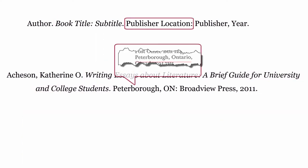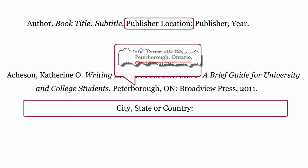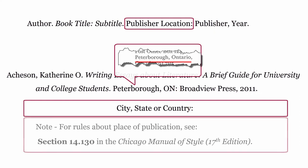Publisher location: this is where the publisher is based. The publisher's location is formatted using the city, comma, and then the state or country, then a colon. For rules about the place of publication, see 14.130 in the Chicago Manual of Style, 17th edition.